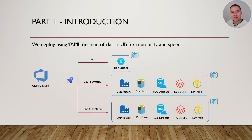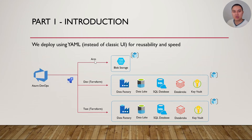To illustrate what we're going to do, here's an overview of what we're going to deploy. We're going to use the DevOps pipeline YAML style instead of the classic UI for usability and speed. In this diagram you can see Azure DevOps with the pipeline logo. We'll initially deploy a storage account and resource group using an ARM template — this is where we'll store the Terraform state file so Terraform remembers the last deployment. The next two environments — dev and test — are identical and will both be deployed with Terraform, consisting of Data Factory, Data Lake, SQL DB, Databricks, and Key Vault.